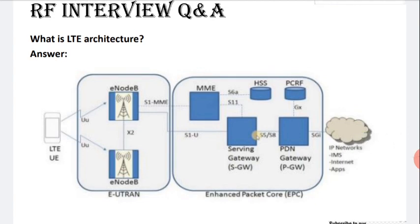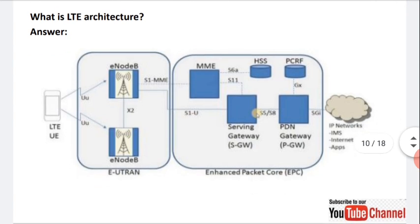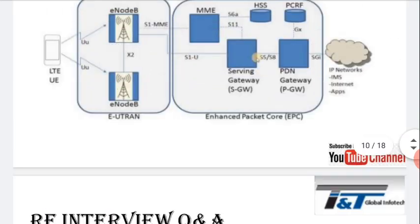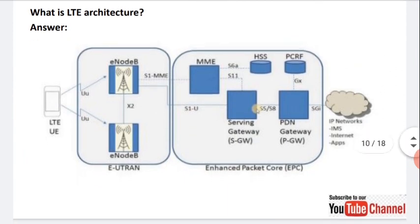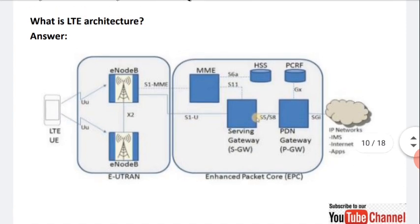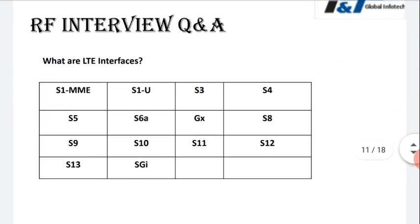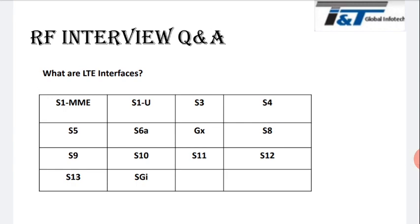The basic LTE architecture can be drawn as UE, then E-UTRAN, then EPC, and IMS services. If the interviewer asks for full details, you have to show the full picture. I have already added videos on LTE interfaces on my channel so you can go through and get details about what each interface is and where it is connected. The LTE interface list includes S1-MME, S1-U — same as shown in the architecture.